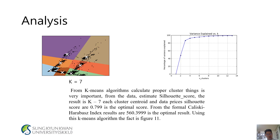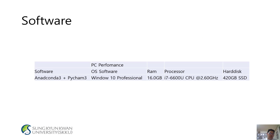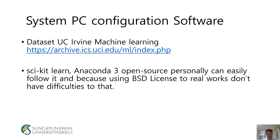Using the K-means algorithm, the result is shown in Figure 11. Software: R3 Plus Highcham3. PC Performance OS Software: Windows 10 Professional, RAM 16GB, Processor i7-6000, CPU 2.60GHz, Hard disk 420GB SSD. System PC configuration software.